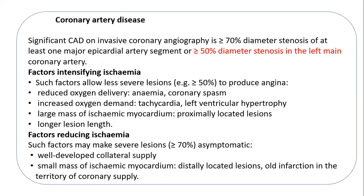We can look for factors that intensify or reduce ischemia. Factors that intensify ischemia include anemia, coronary spasm, tachycardia, LV hypertrophy (increasing oxygen demand), large mass of ischemic myocardium (proximal lesions), and longer lesion length on coronary angiography. Factors that reduce ischemia include well-developed collateral supply and a small mass of ischemic myocardium.